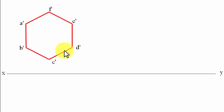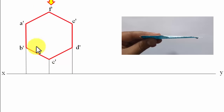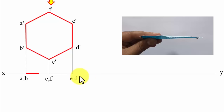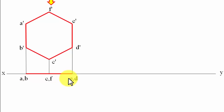We've created the front view assuming the surface lies entirely on the VP. Now looking from the top with projector lines, the top view lies entirely on the XY line — it becomes a single line representing points A,B / C,F / D,E. Step one is complete.